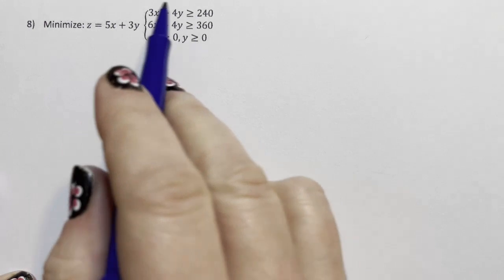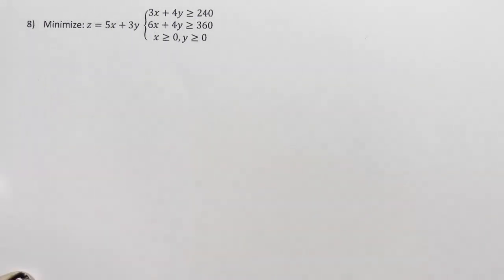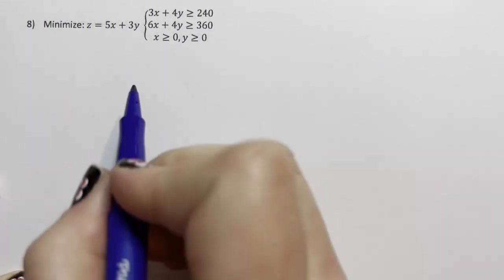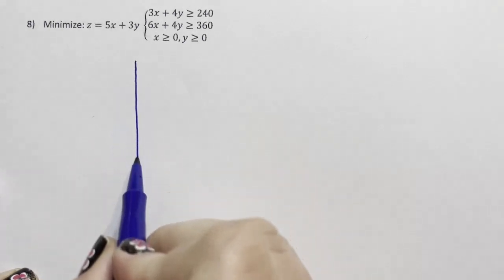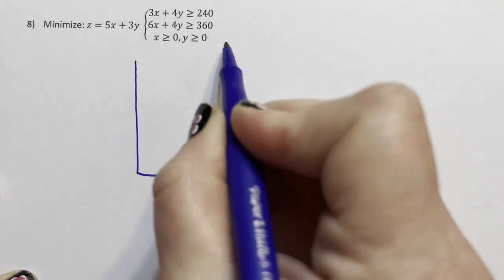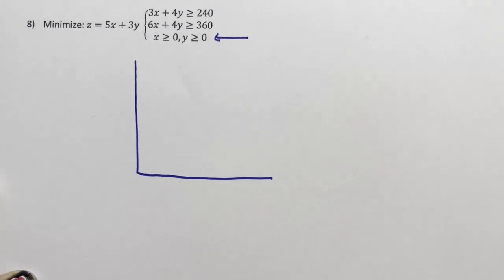So it says minimize according to these constraints. This is a sketch. We're going to sketch the first quadrant. We know it's the first quadrant because this right here says x and y have to be positive.